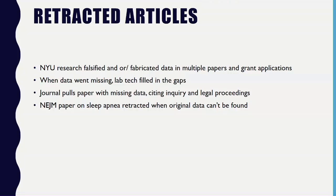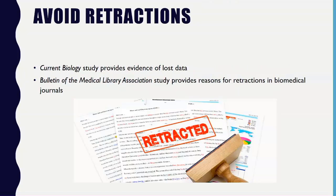Obviously you do all this work and go through the effort to have it published — you don't want your paper retracted just because you can't find the original data. So you want to avoid retractions. The first study, from Current Biology, did a scan of 516 articles on a specific topic ranging from publication dates of 1991 to 2011.